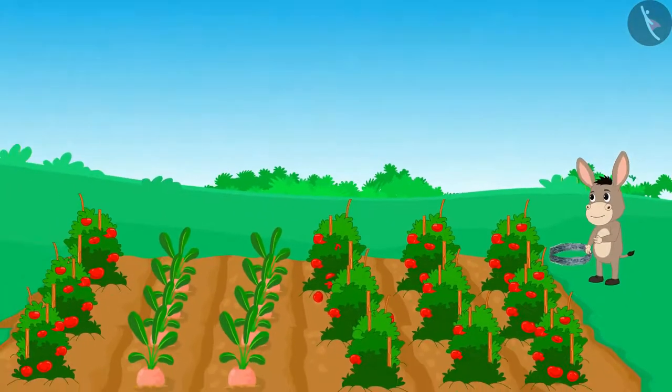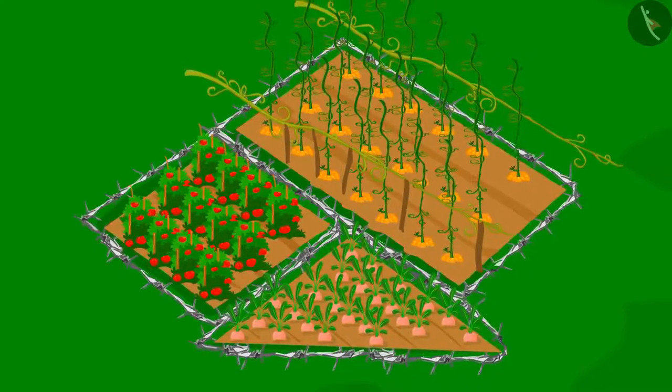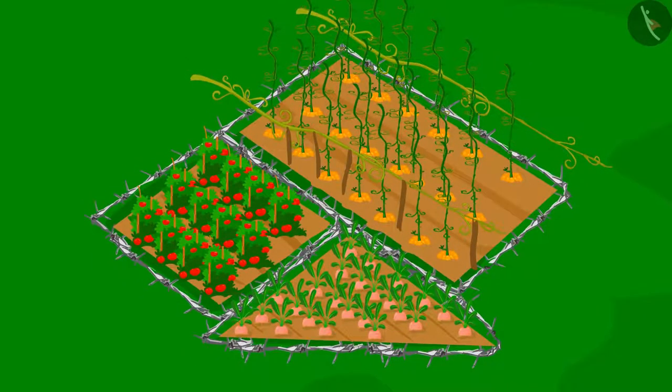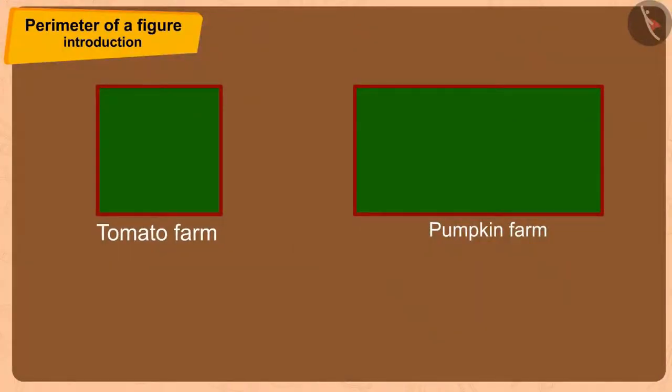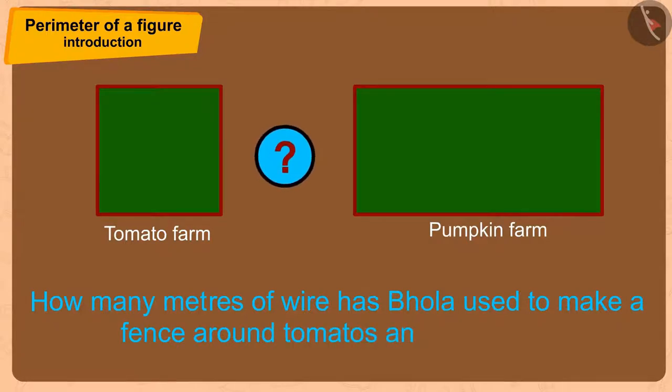Initially, Bhola made a fence for that part of the field in which tomatoes and pumpkins were sown. If tomatoes and pumpkins have been cultivated in these types of squares and rectangle shapes, can you answer how many meters of wire has Bhola used to make a fence around tomatoes and pumpkins?